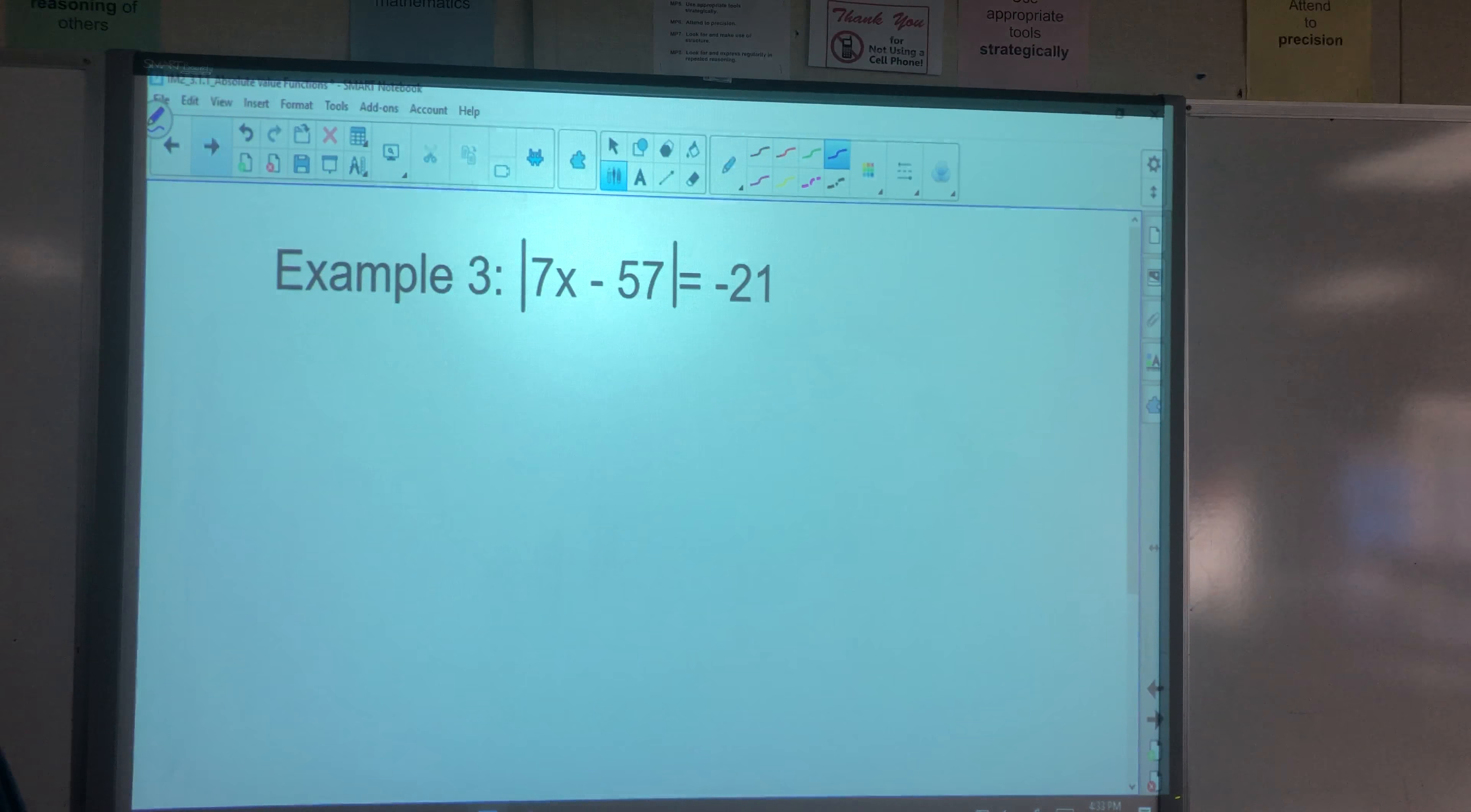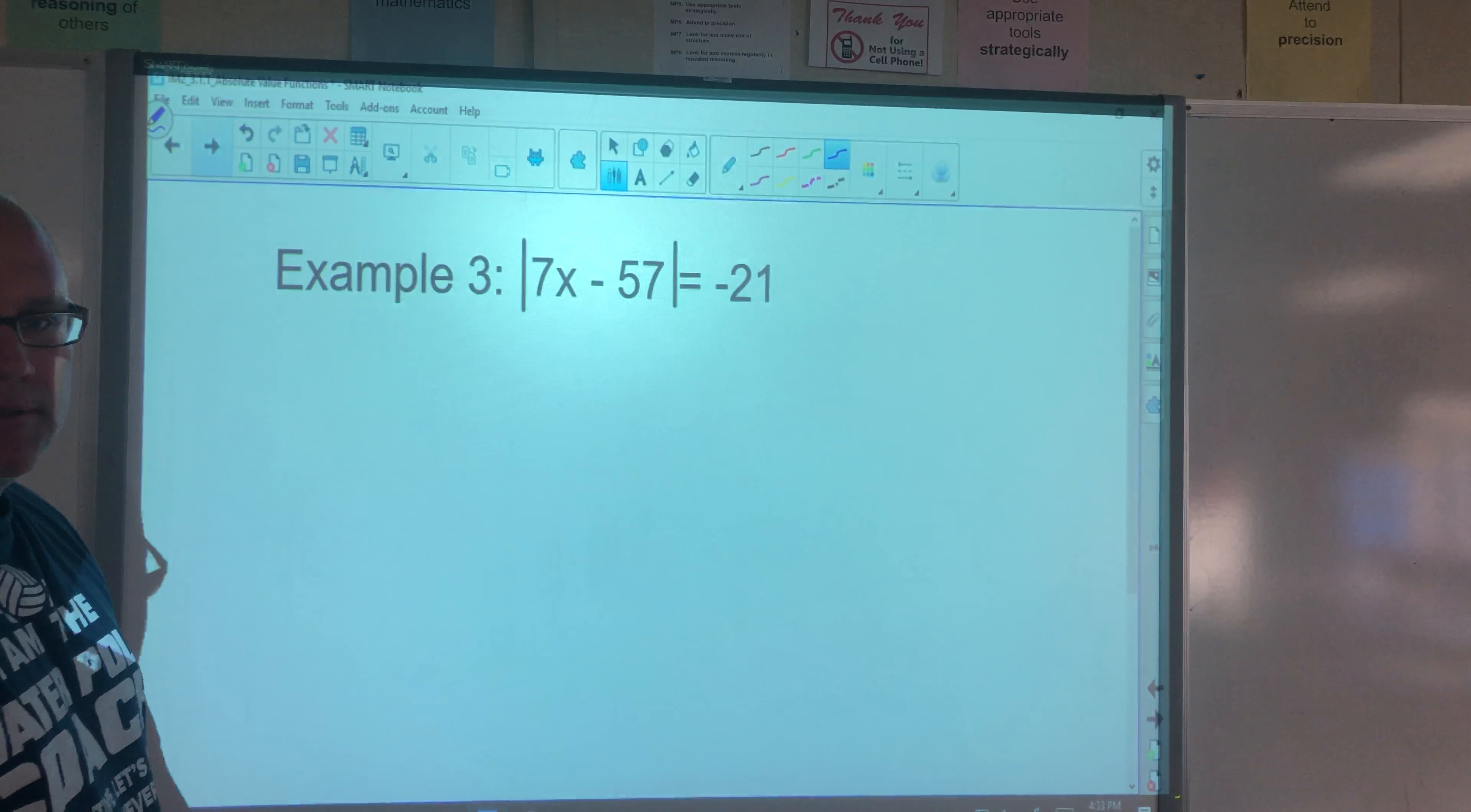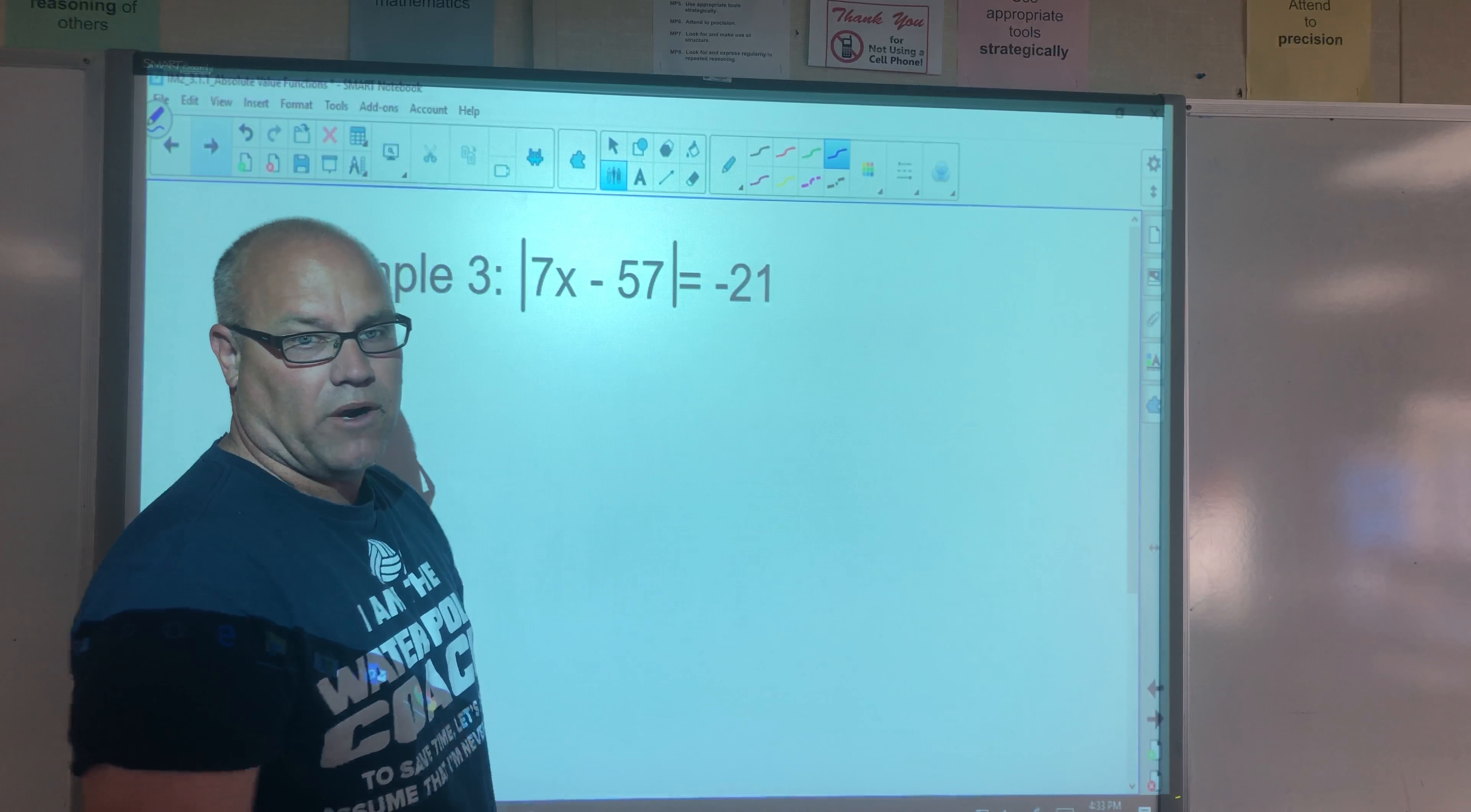Next example is also a special case here. We have the absolute value of 7x minus 57 equals negative 21. Think about this. Do I just break it into two equations? Equal to positive 21, negative 21? No. You can't do that because no matter what you substitute for x, whatever value you plug in for x, it's going to be impossible to get negative 21, right?